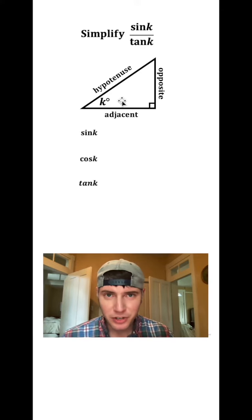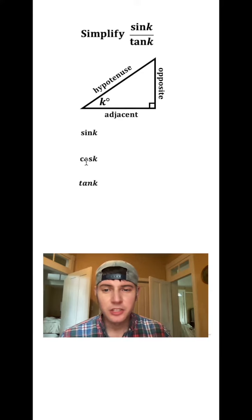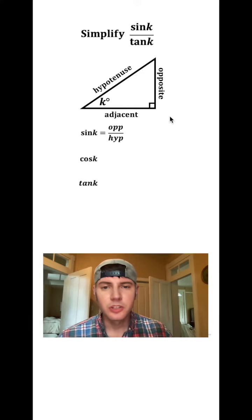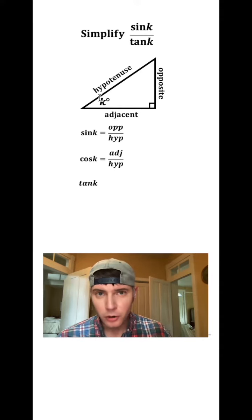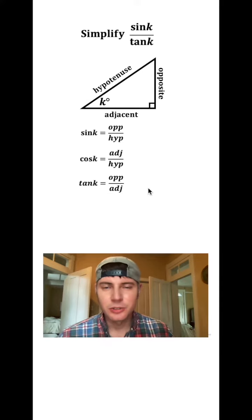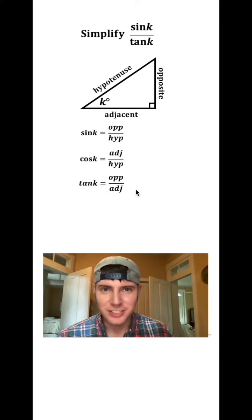We have three trigonometric functions here: sine of k, cosine of k, and tangent of k. Sine is going to be equal to the ratio of the opposite side over the hypotenuse. Cosine is equal to the ratio of the adjacent side over the hypotenuse, and tangent is equal to the ratio of the length of the opposite side over the length of the adjacent side.